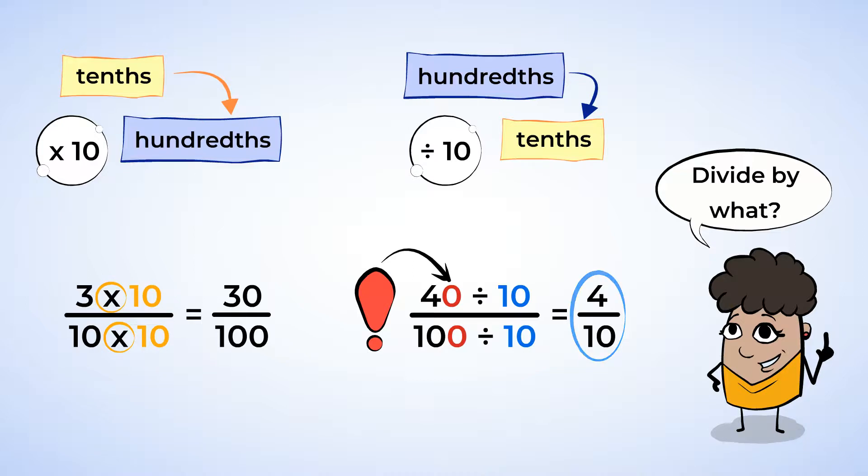Look at that! The zero on the end of the numerator and denominator goes away when we divide by 10. Well that makes things simple.